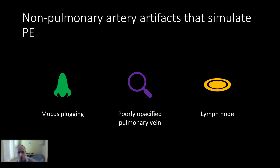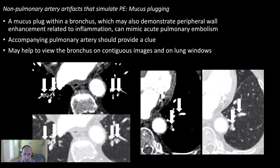Now shifting to things that are not pulmonary artery filling defects but may simulate or be confused with pulmonary emboli. With mucus plugging, bronchi are right next to their accompanying pulmonary arteries. If you're not paying close attention, or if motion artifact obscures what is pulmonary artery versus bronchus, you could mistake these for pulmonary artery defects. It's important to look for the adjacent bronchus and pulmonary artery, and trace the apparent filling defect back to the pulmonary artery — that's the key.